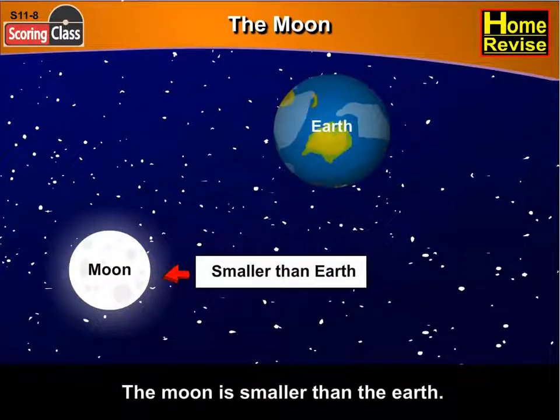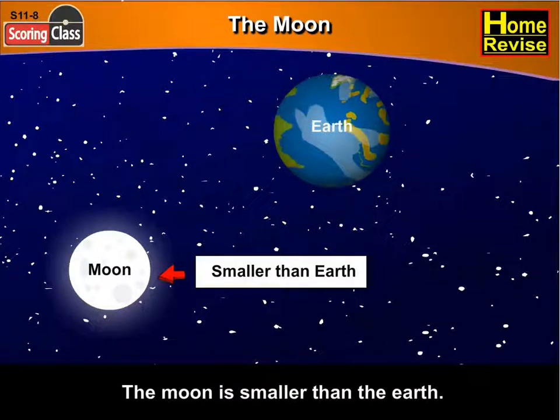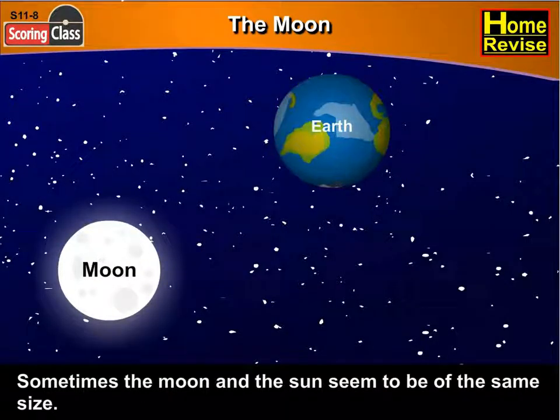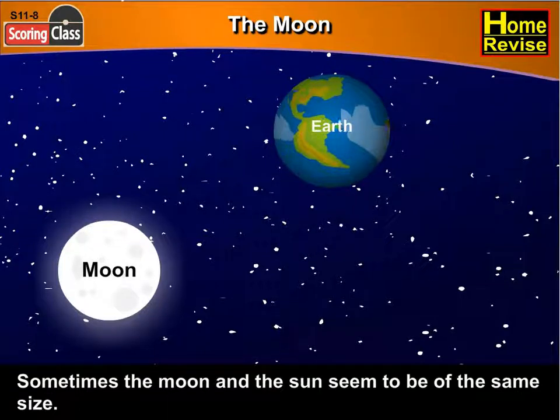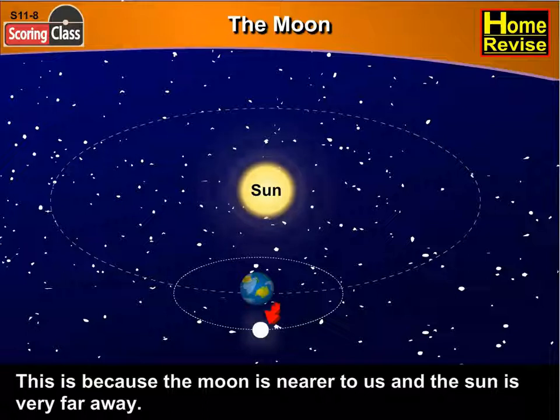The Moon is smaller than the Earth. Sometimes the Moon and the Sun seem to be of the same size. But this is because the Moon is nearer to us and the Sun is very far away.